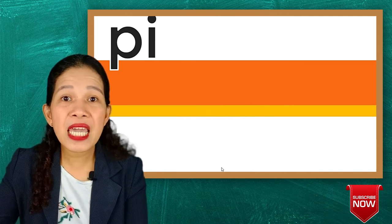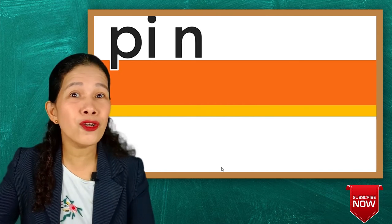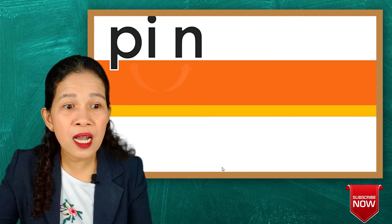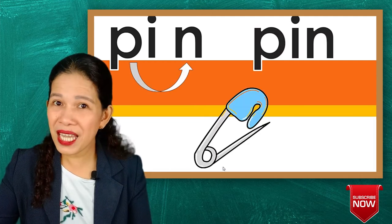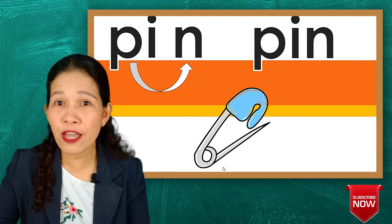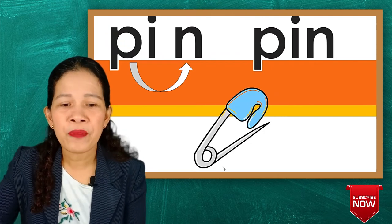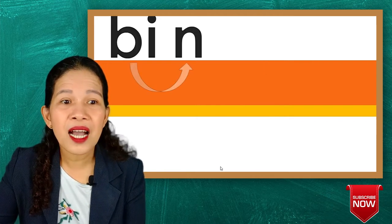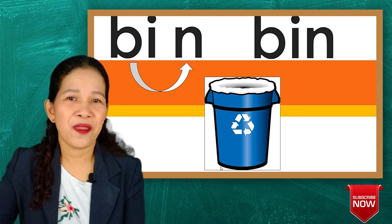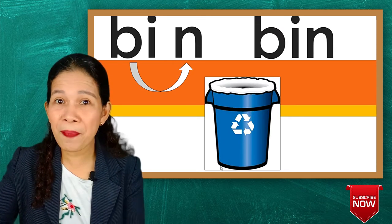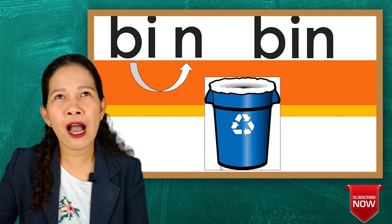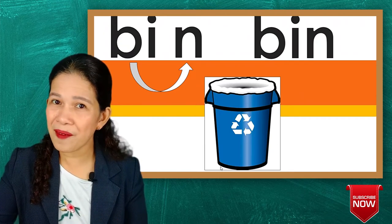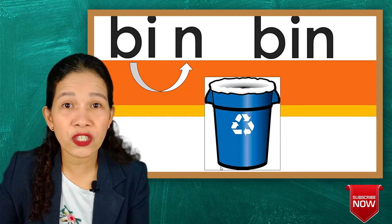That's pi-n. Look at that ending sound that now becomes N. So you would say pin. That's a safety pin, but there are some other kinds of pin. Next you say bin. Look at that bin — we have here a trash bin. When you have something like where you put dirty clothes, you could say clothes bin, but here the picture is a trash bin.